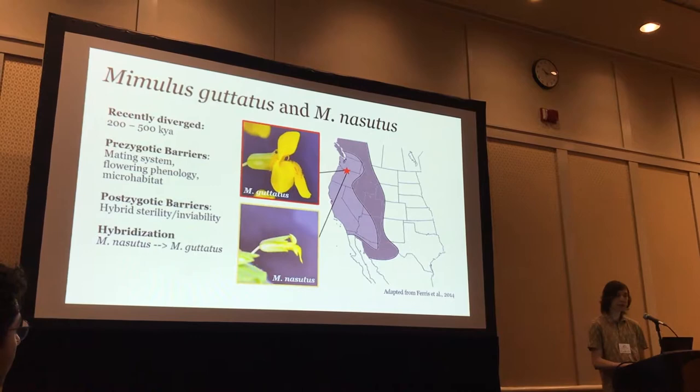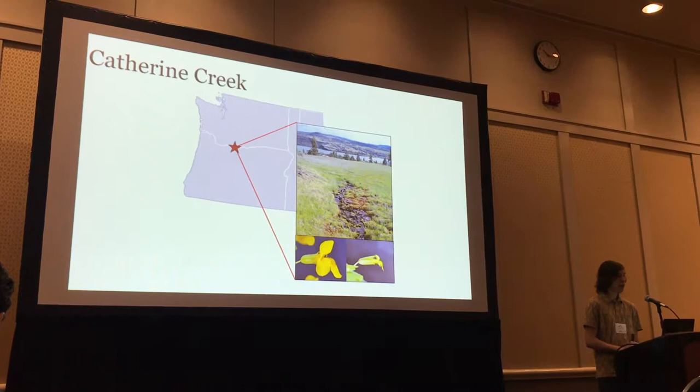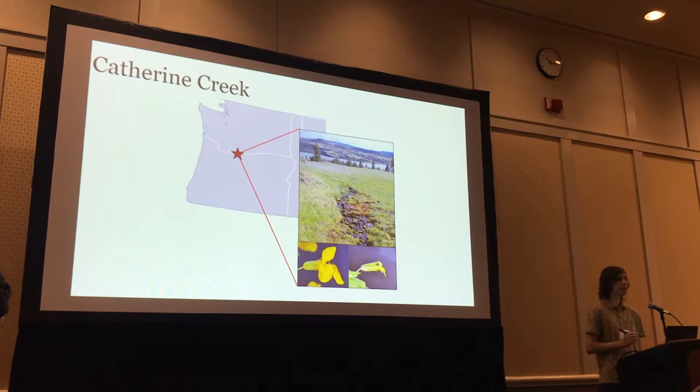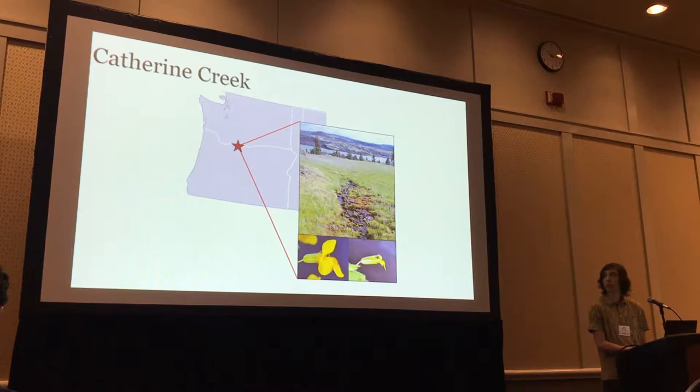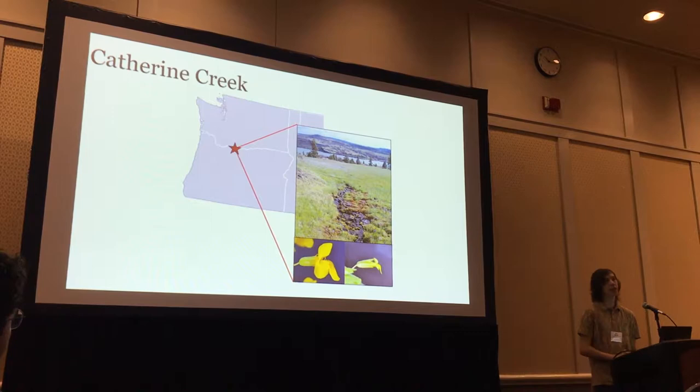I'm zooming into my particular site. I'm focusing on individuals from Catherine Creek, which is this sympatric site with guttatus and cupreus living in a system of ephemeral streams right on the border of Oregon and Washington. It's primarily fed by spring rain and spring snowmelt out of the Cascades, flowing down into the Columbia River. This leads to both physical heterogeneity in water availability throughout the stream, as well as temporal heterogeneity.